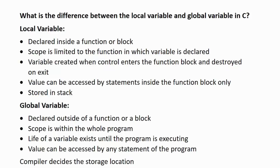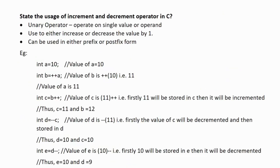Next question: what is the difference between a local variable and a global variable in C? Local variables are declared inside a function or a block. Their scope is limited to the function in which they are declared; they are created when control enters the function block and destroyed on exit, and their values can only be accessed by statements inside that function block. They are stored in the stack. Global variables are declared outside of a function or block. Their scope is the whole program, so they can be accessed anywhere within the program. They exist for the lifetime of the program, and the compiler decides their storage location.